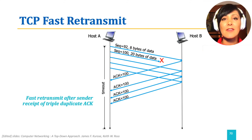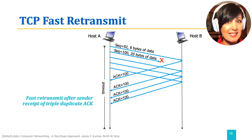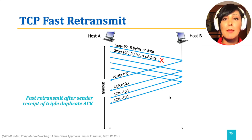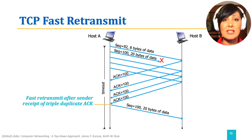Upon receipt of three of these ACKs — triple duplicate ACKs — which might be well before the timeout for the segment with sequence number 100, this will trigger the fast retransmit of the segment with sequence number 100.